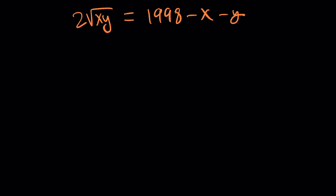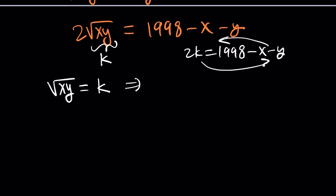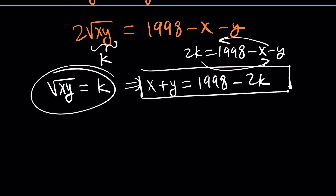Why don't we call this something — how about k? Set square root of xy equal to k. So 2k equals 1998 minus x minus y, which means x plus y equals 1998 minus 2k. I also know the value of xy — the product — because I can square both sides and that gives me k squared.